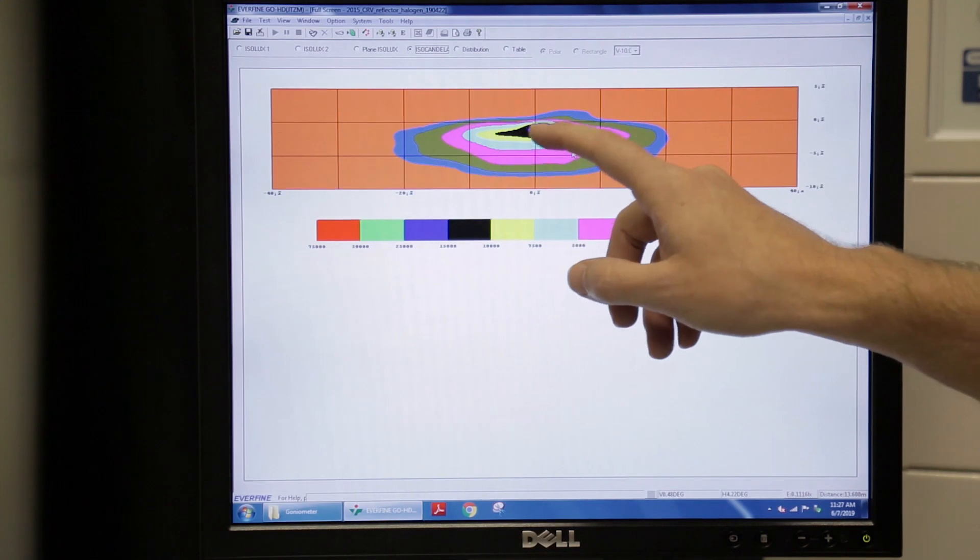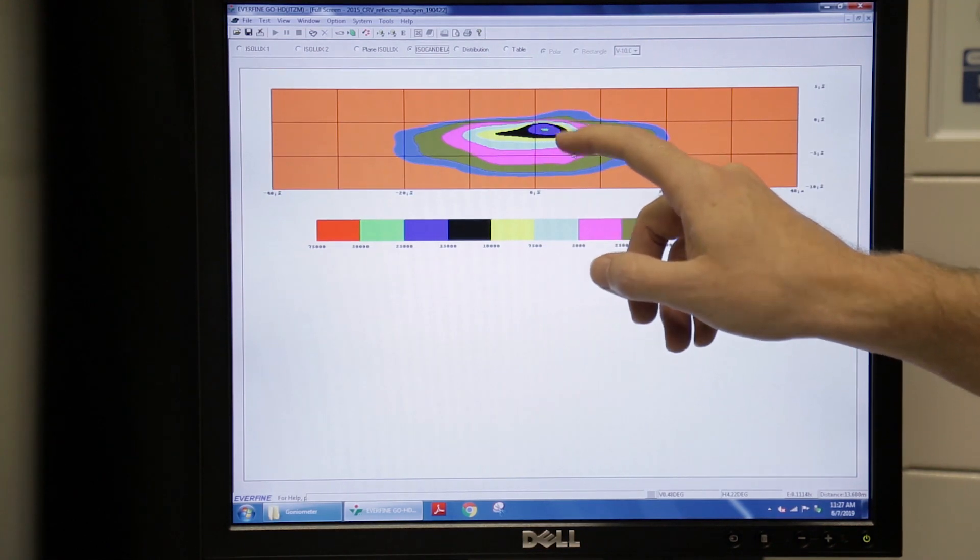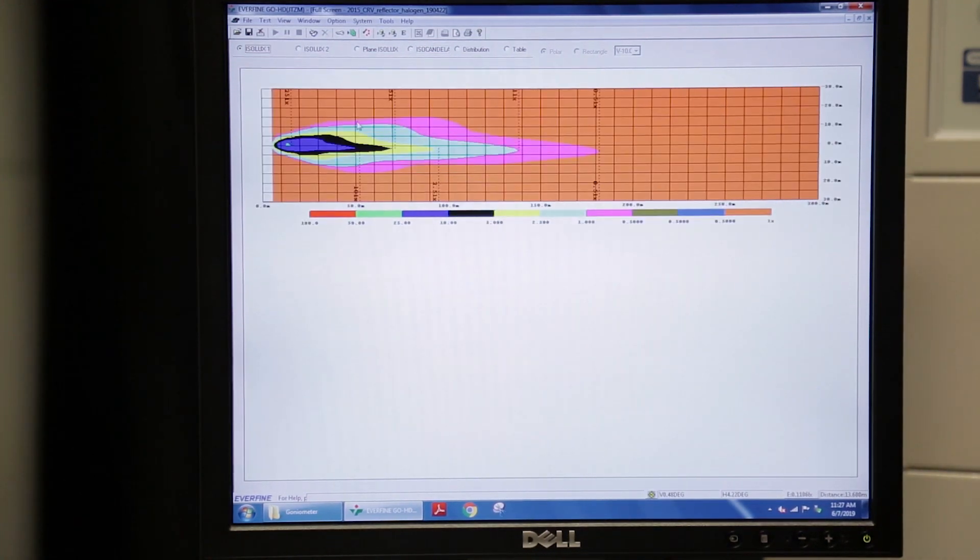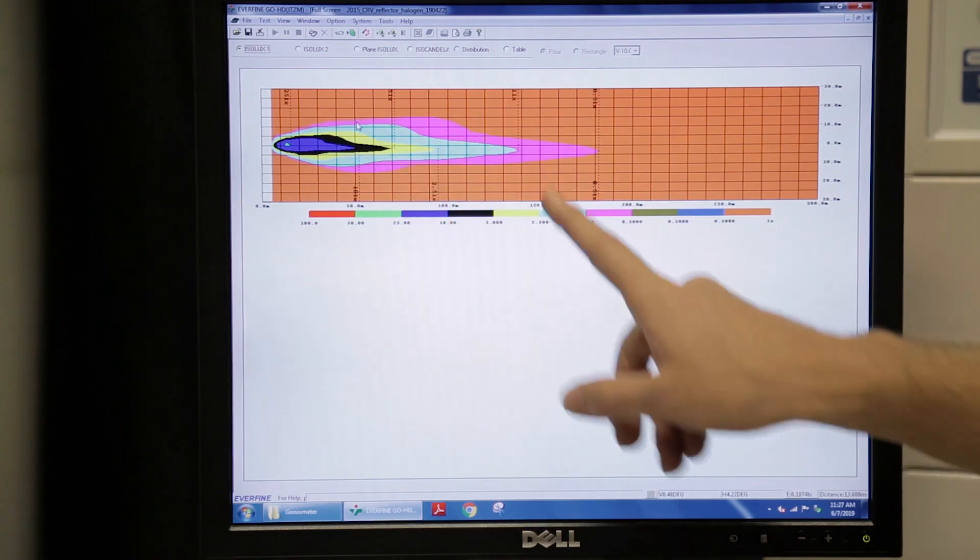You can see on this headlamp like on all headlamps we've got our hot spot just a little bit to the right and down and then a nice cutoff line. We can also determine how high it is off the ground and then get this bird's eye view.